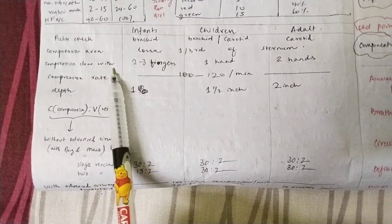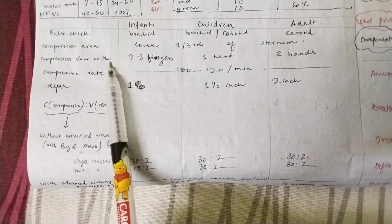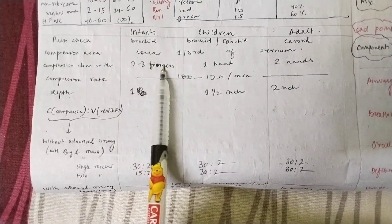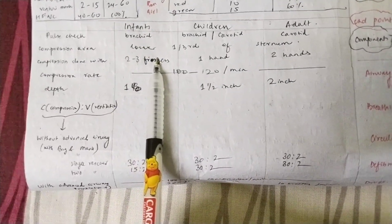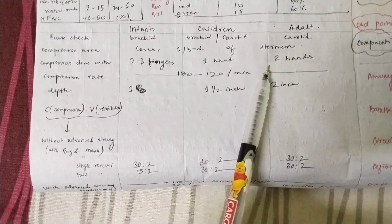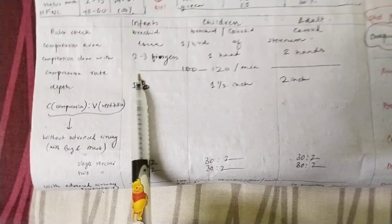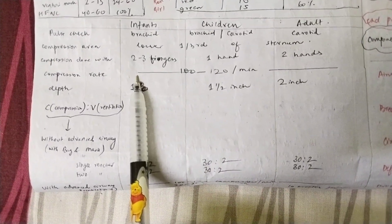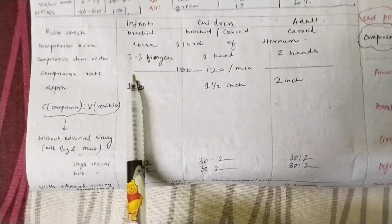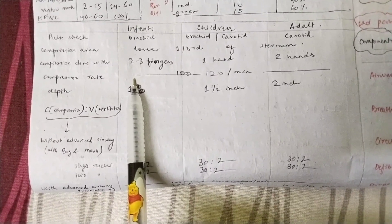How will you give the compression? For infants, use only two to three fingers. For children, use one hand. For adults, use two hands. The compression rate is 100 to 120 chest compressions per minute.